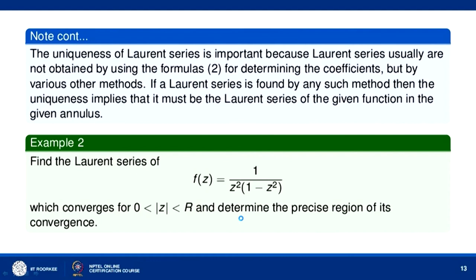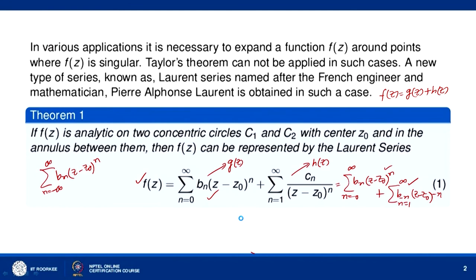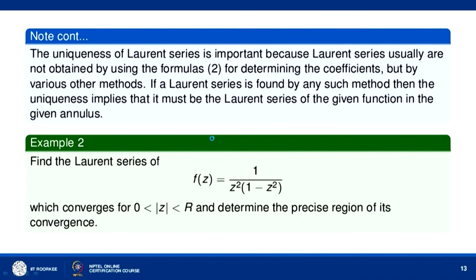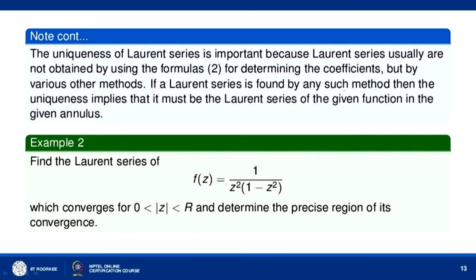The uniqueness of the Laurent series is important because Laurent series are usually not obtained by evaluating the coefficients b_n and c_n by the integrals, but by alternate methods. If a Laurent series is found by any such method — expanding f(z) centered at z = z0 in positive and negative integral powers of (z-z0) — then by uniqueness it must be the Laurent series of that function in that annular region.